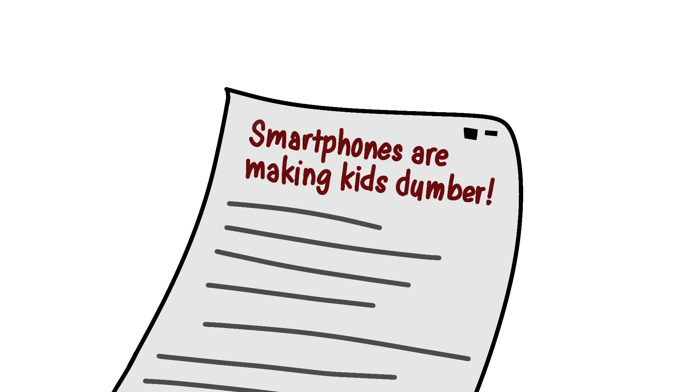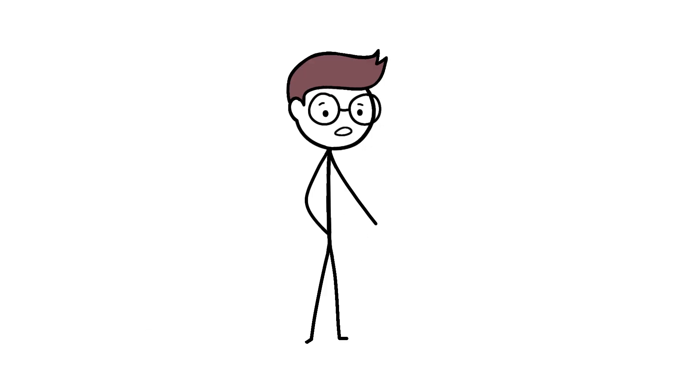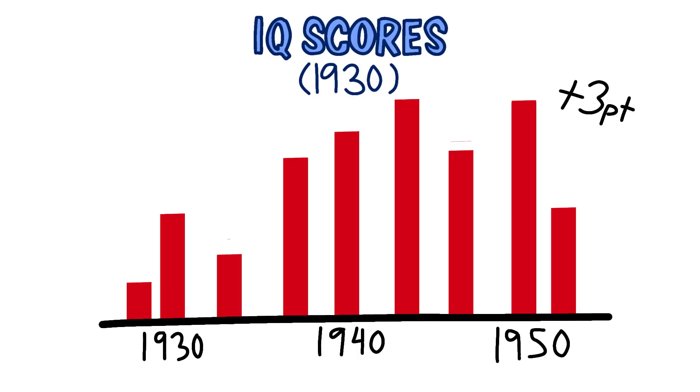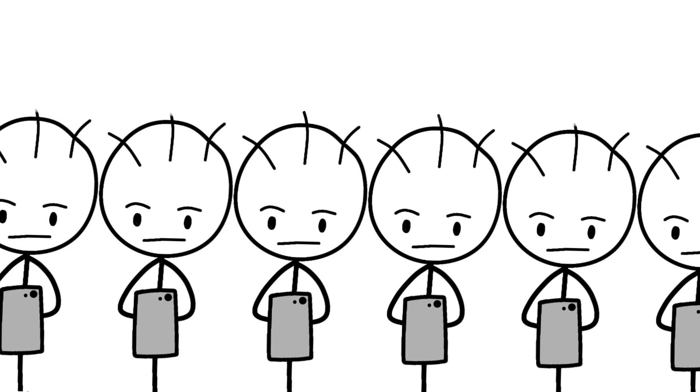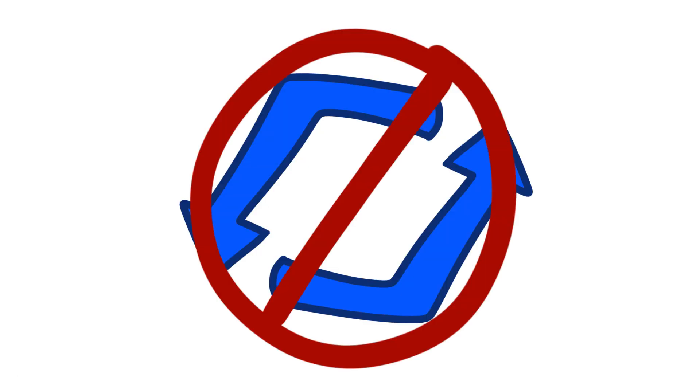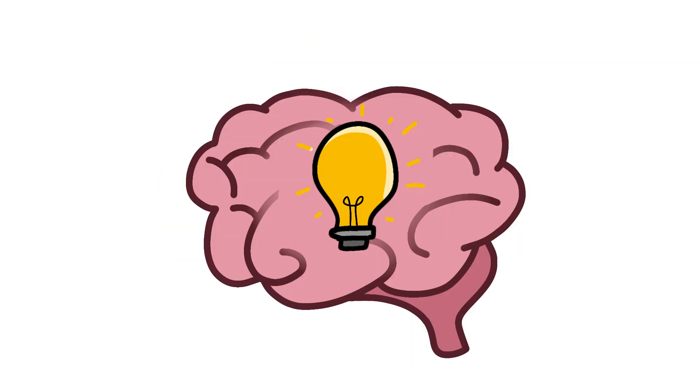The myth of digital dementia. Smartphones are making kids dumber, scream the headlines. The data says something completely different. IQ scores have been rising globally at about 3 points per decade since the 1930s, a phenomenon called the Flynn effect. Even with smartphones everywhere, this trend continued until around 2018, when it plateaued. Not reversed, plateaued. What actually changes is how brains process information.